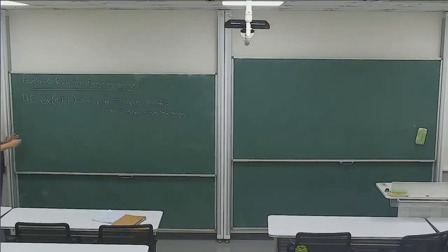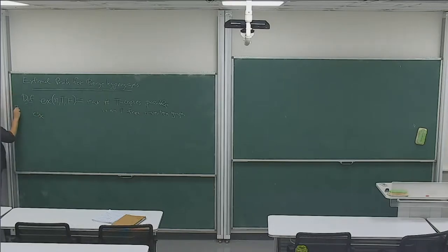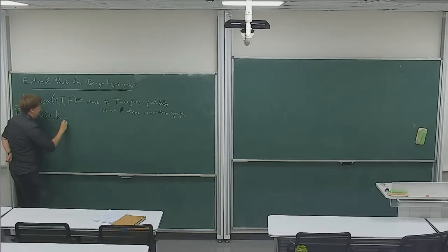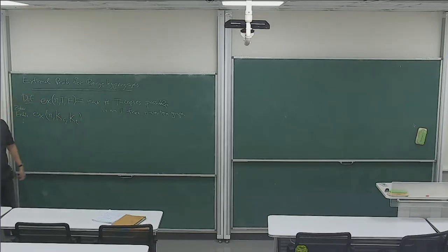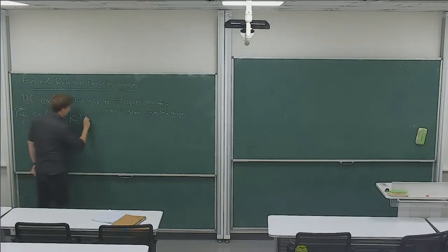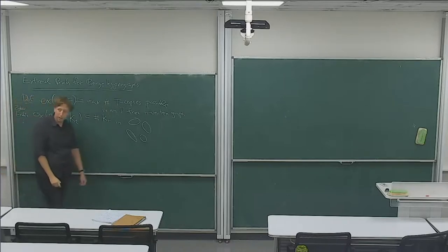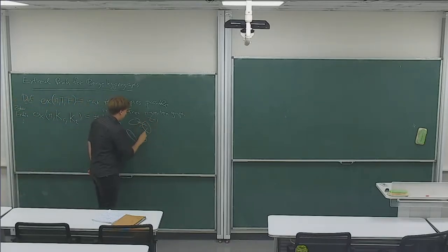Remember this from last time. A few basic facts: for cliques, it was proved by Zykov and Erdős — and as Corey said, every graduate student knows this, probably Hungarian high school students too — that for cliques, this number is maximized by the Turán graph. That is the graph where we take t-1 classes and totally connect them.